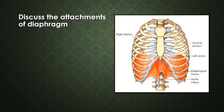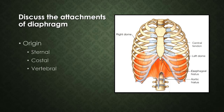The diaphragm takes origin from the body wall all around and inserts in the central part. The skeletal structures it finds in the body wall are: anteriorly the sternum, at the sides the ribs, and posteriorly the vertebrae - these are the three origins. Sternal fibers arise from the back of the lower part of the sternum and pass posteriorly towards the central tendon. The inner surfaces of the lower six ribs give origin for costal fibers, which interdigitate with transversus abdominis. Vertebral origin is from lumbar vertebrae L1 and L2.